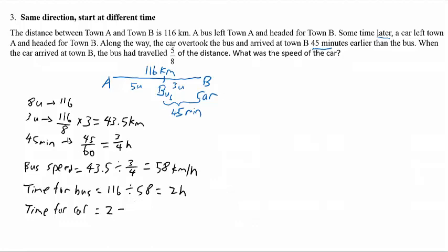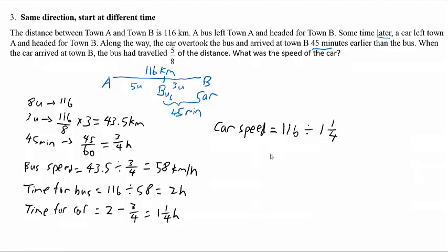2 hours minus 45 minutes, which is 3 quarter hour, gives us 1 and 1 quarter hours. This is the time for the car to travel from A to B. Finally, to find the car speed, we take the total distance 116 divided by the total time for the car, which is 1 and 1 quarter. When you punch it into the calculator, you get 92.8 kilometers per hour. This is the speed of the car.